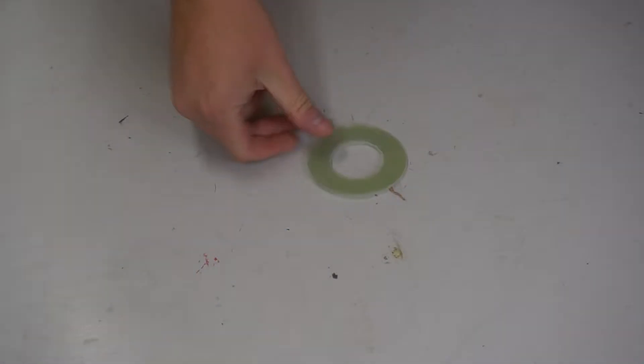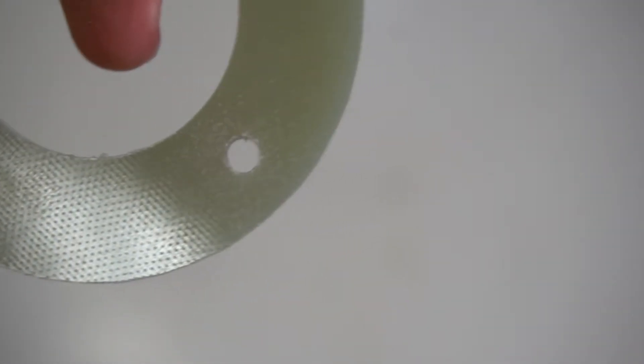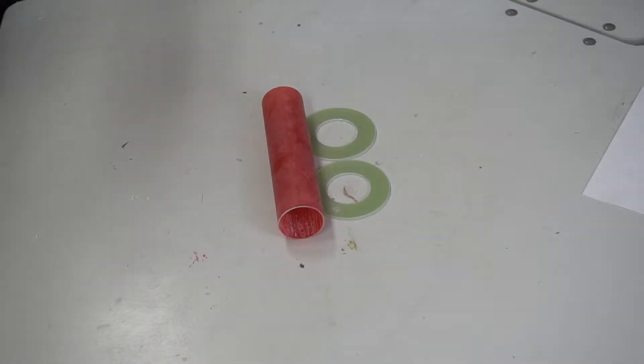Pick whichever of the two centering rings you like best and designate it your forward ring. Mark it and drill a 3-16th hole in it. This hole is going to be used for your eye bolt to attach your shock cord to. We'll get to that a little bit later.